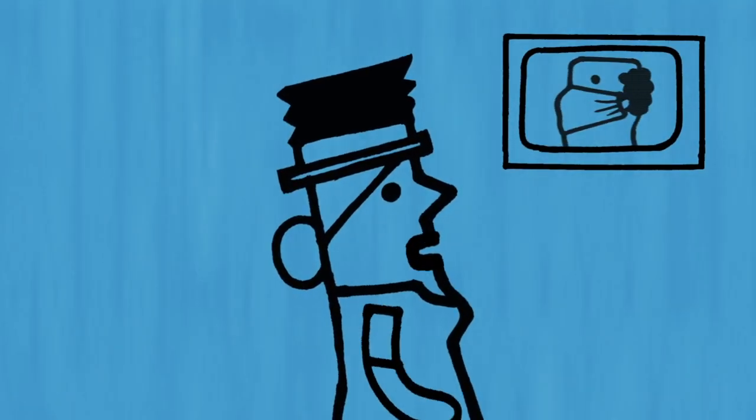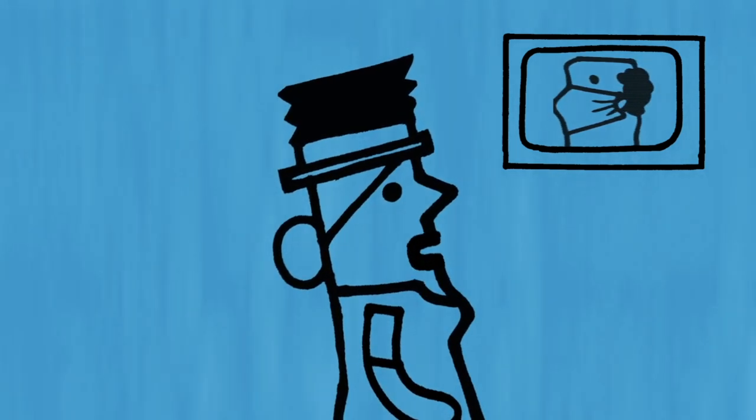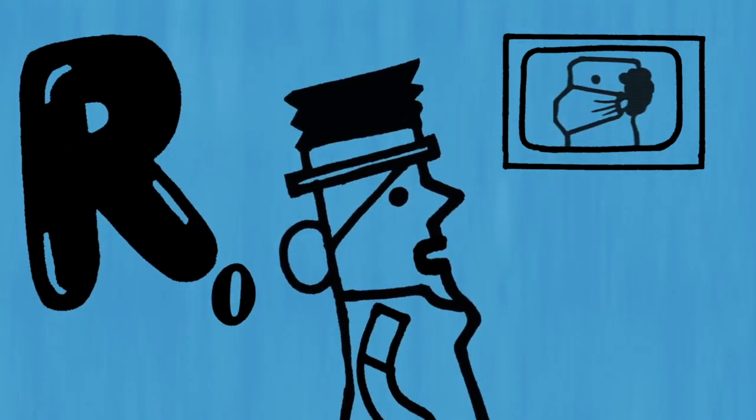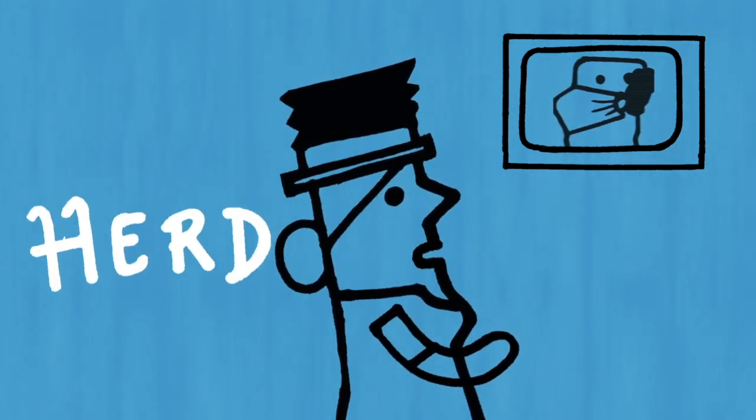Professor, we really need some help with all these numbers and concepts. Could you please explain what is this mysterious R0 or R-naught, and how is it related to herd immunity?